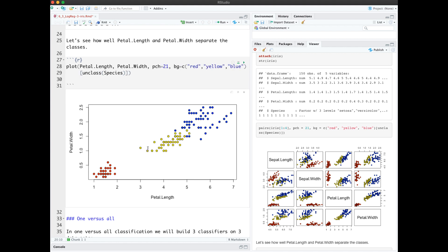This code is plotting petal length and petal width and coloring the dots by class. We see that it will be fairly easy to separate this class over here, but it's a little bit messier to separate these two classes.